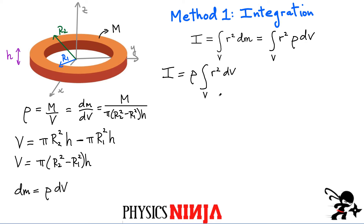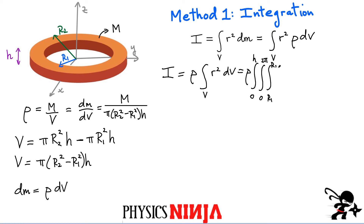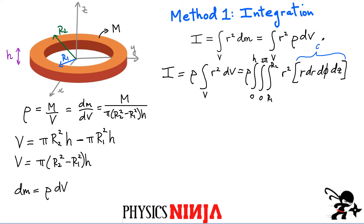A volume integral means integrating over three different coordinates. Because of the symmetry, it's best to use cylindrical coordinates. We replace that one volume integral with three: the height integral from 0 to h, the angle integral from 0 to 2π, and the radius integral from r1 to r2. We're integrating the function r², and the cylindrical volume element is r·dr·dφ·dz.